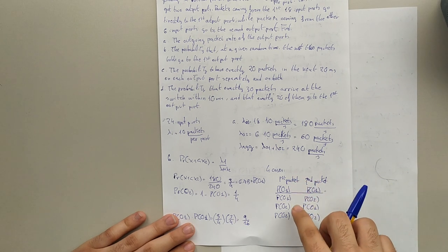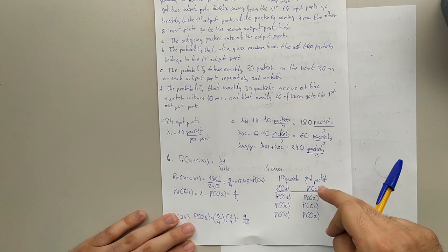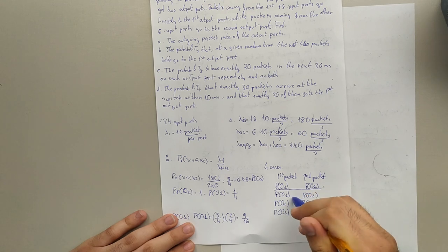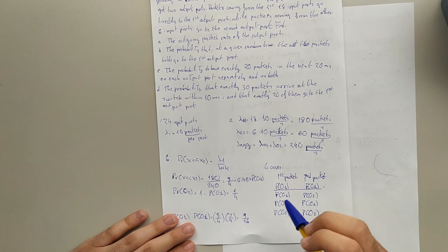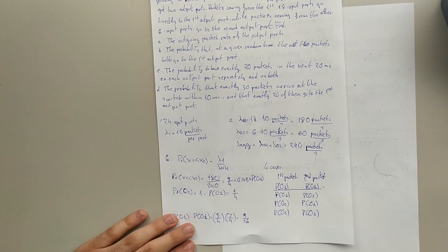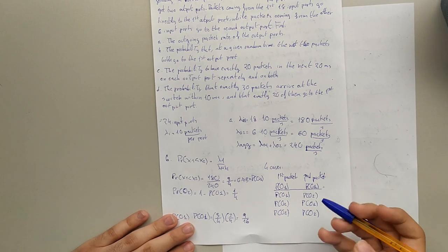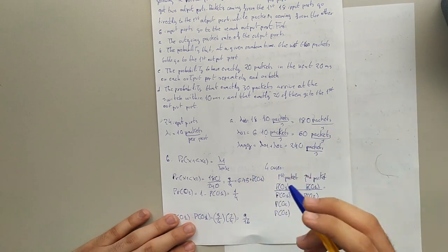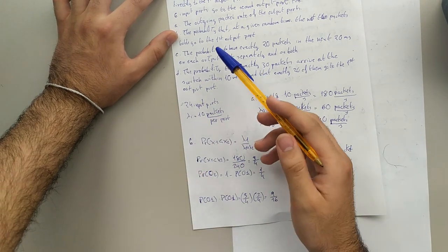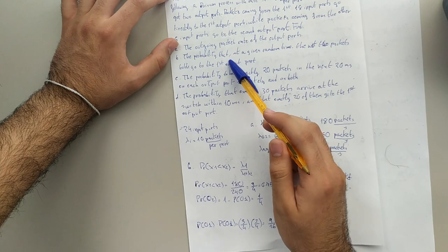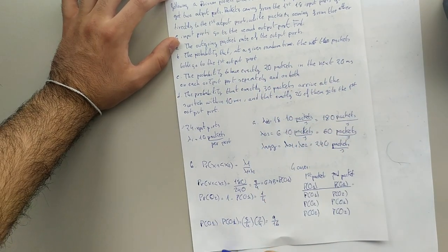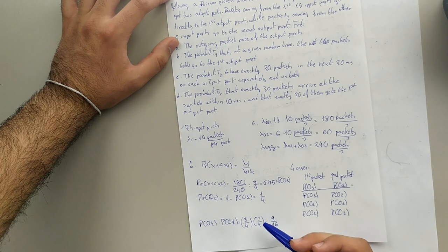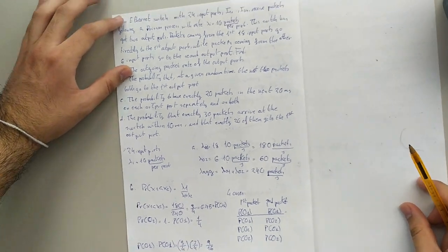The cases are: the first packet goes to the 18-port group and the second also goes to the 18-port group; the first goes to the 18-port group and second goes to the 6-port group; the first goes to the 6-port group and the second to the 18-port group; and lastly, both go to the 6-port group. Since the problem asks for the probability that the next two packets both go to the first output port, it will be 3/4 times 3/4, which equals 9/16.